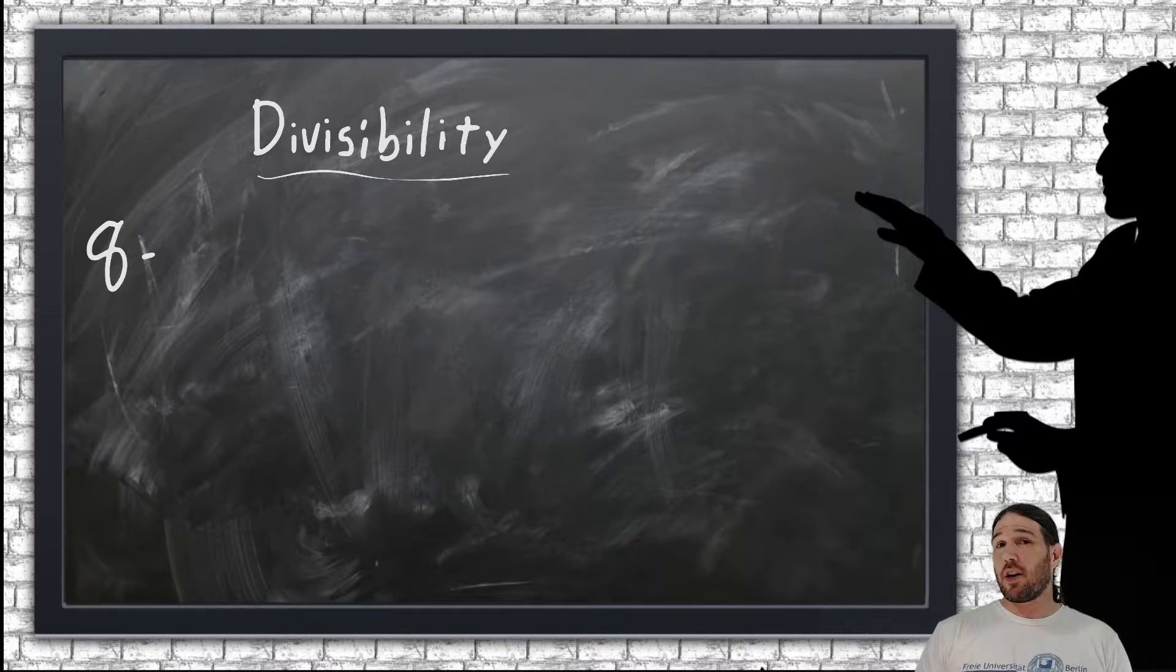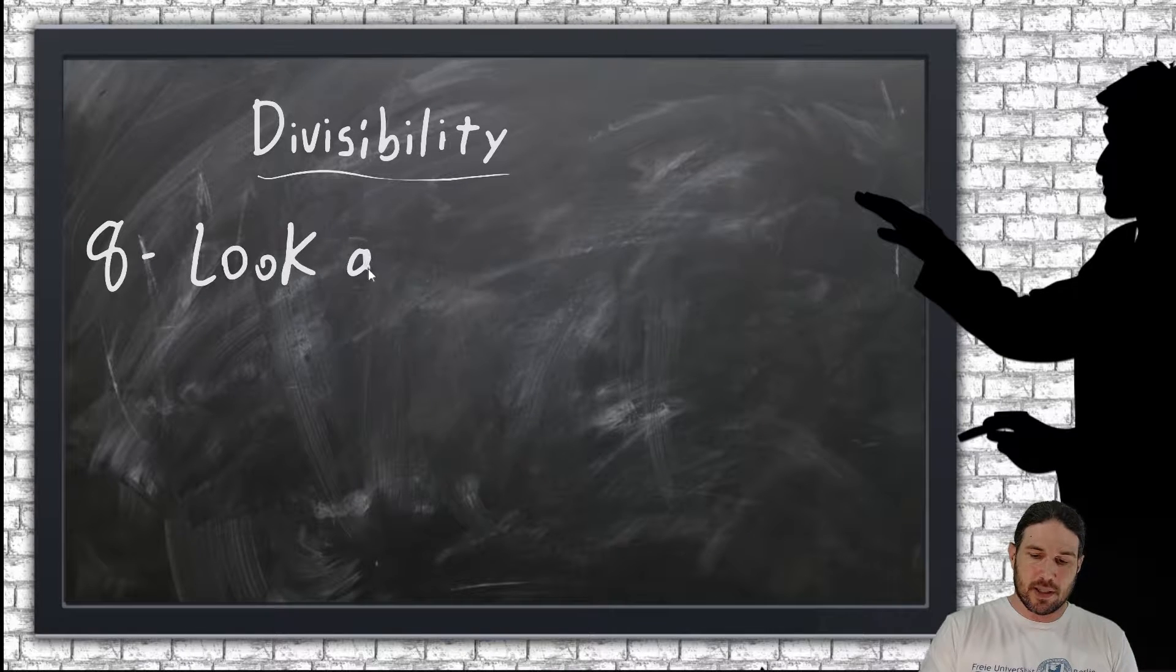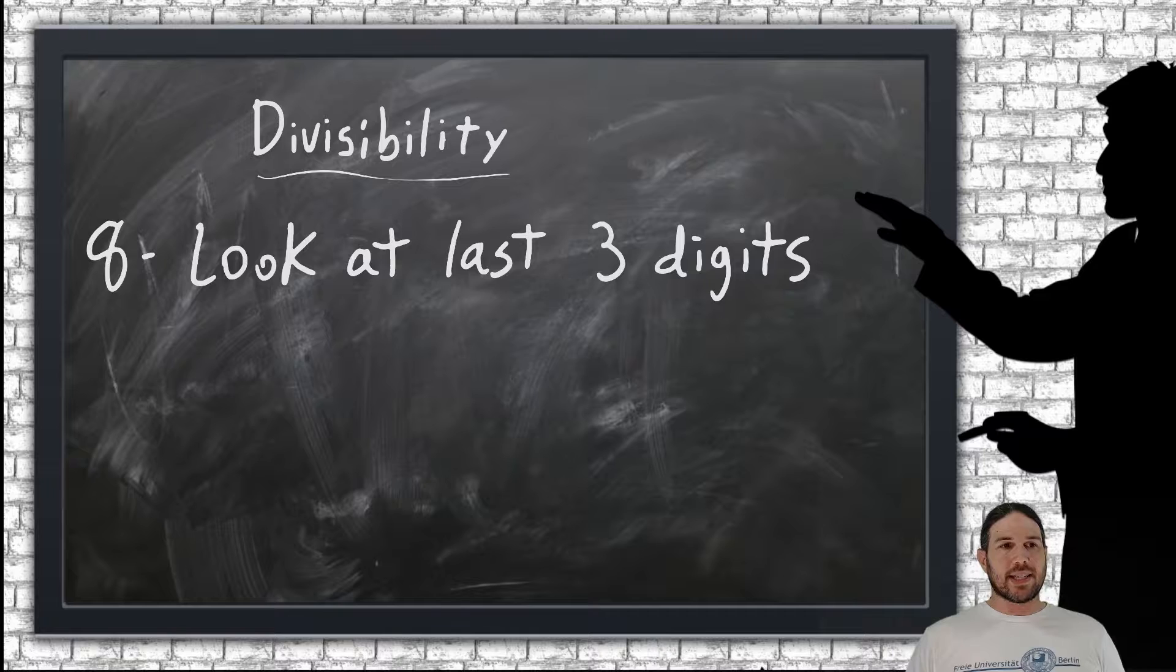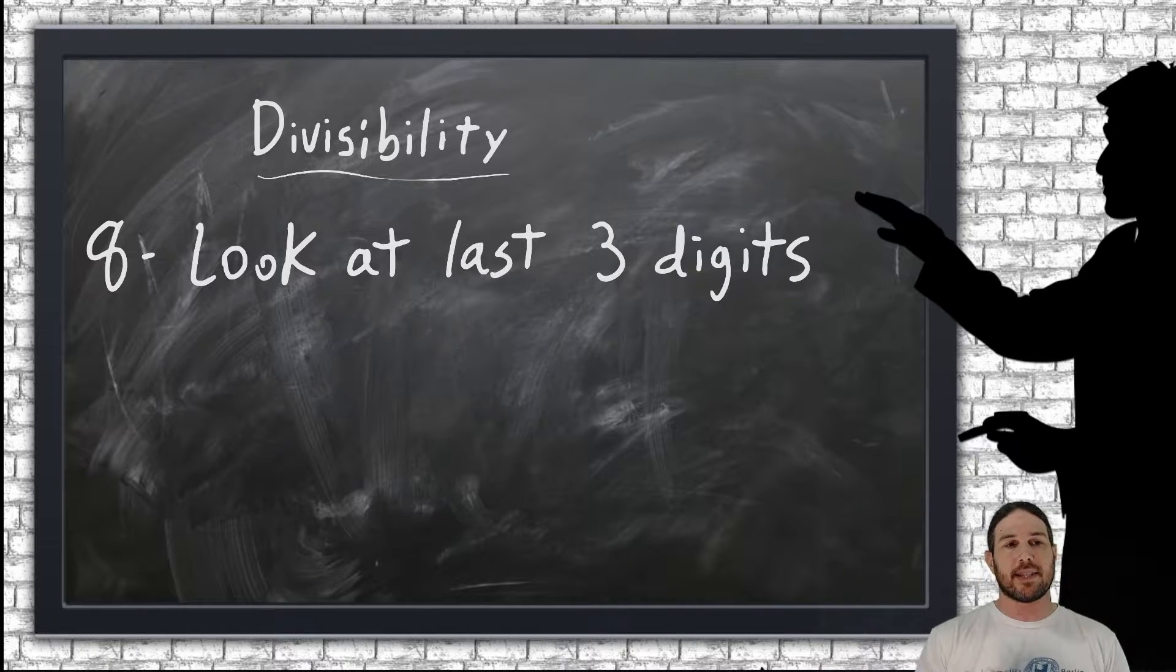8 isn't very interesting, and I'm not going to do an example. All you have to do is look at the last three digits, just like with 4, except instead of seeing if the last two digits are a multiple of 8, it's the last three digits.